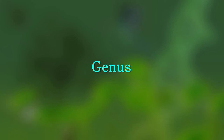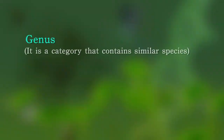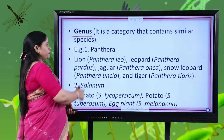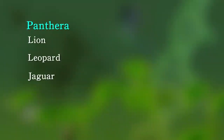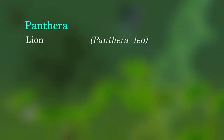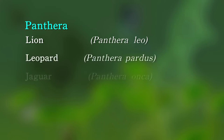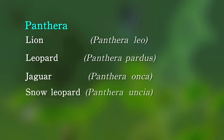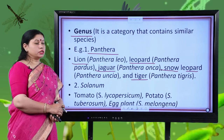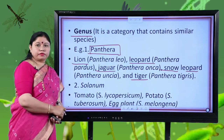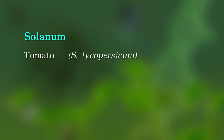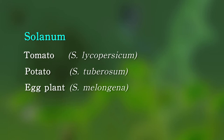Let us explore other taxonomic categories. Genus is a category that contains similar species. For example, Panthera is a genus containing species such as lion (Panthera leo), leopard (Panthera pardus), jaguar (Panthera onca), snow leopard (Panthera uncia), and tiger (Panthera tigris) — all wildcats placed together in genus Panthera. From the plant kingdom, genus Solanum contains tomatoes, potatoes and eggplants — different species with common characters, placed in genus Solanum.